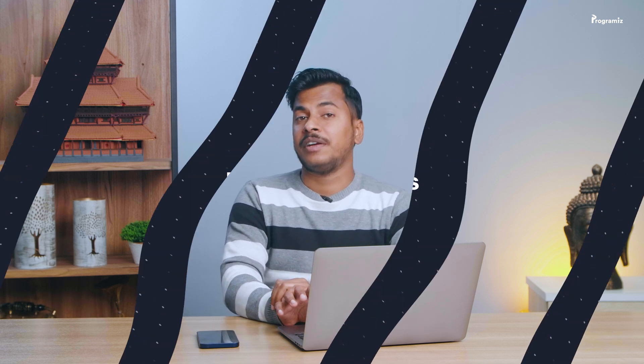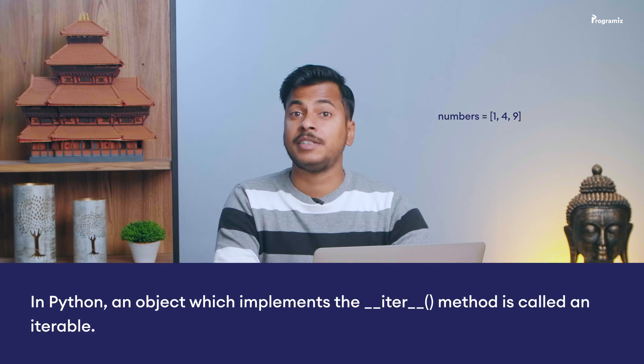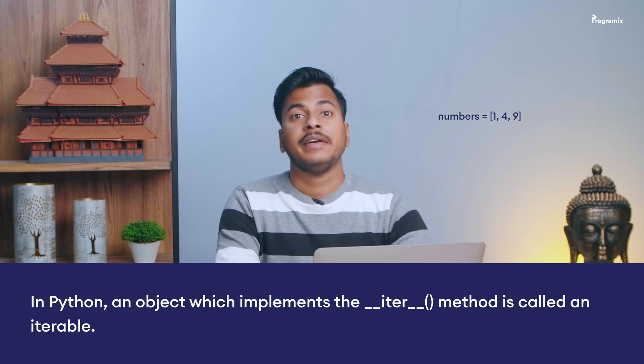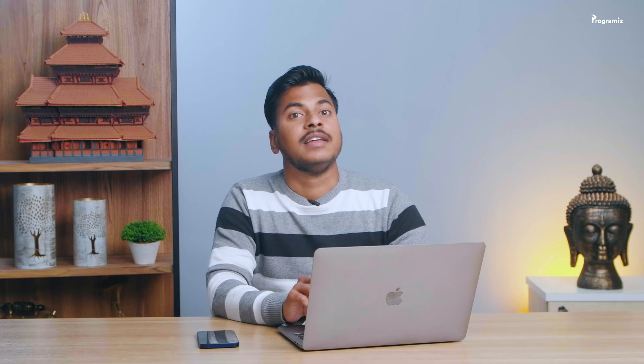Before we learn about iterators, let's first understand what an iterable is. Basically, anything that you can loop over in Python is called an iterable. For example, a list is an iterable. For an object to be considered an iterable, it must have the `__iter__` method. Let's check if lists have this special method.